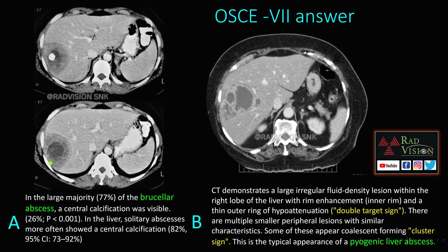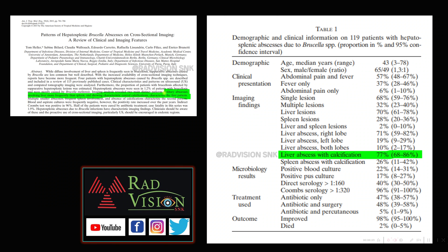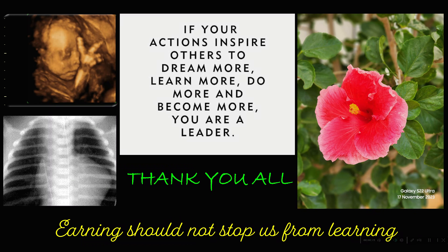The last case shows a hypodense lesion with peripheral lamellated appearance, target-type enhancement, and central calcification — suspect Brucella abscess. Another case shows a hypodense lesion with central rim enhancement surrounded by a hyperattenuating ring — the double target sign — and multiple similar hypodense lesions clustered around the main lesion, which is the cluster sign. Double target sign and cluster sign typically favor pyogenic abscess. Solitary abscess involving the liver more than the spleen, showing central calcification, is seen in 77% of brucellosis cases.